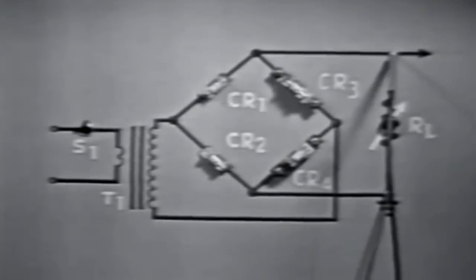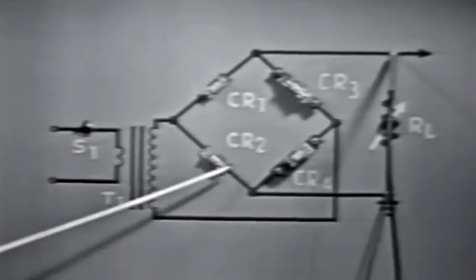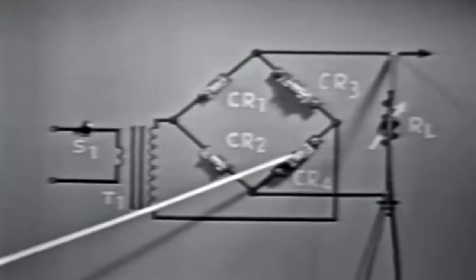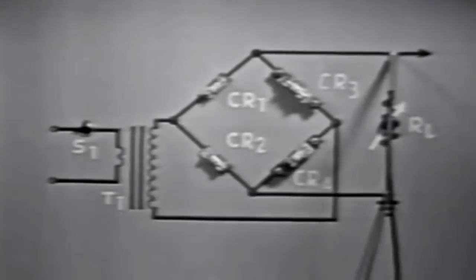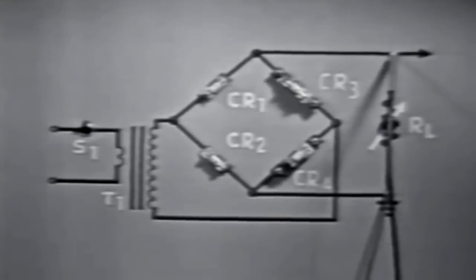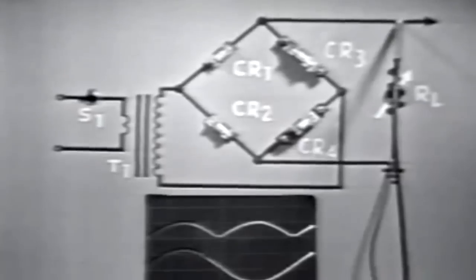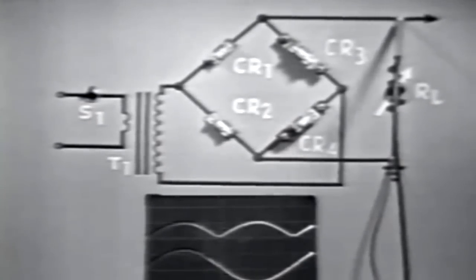The rectifier circuit consists of diodes CR1, CR2, CR3, CR4, and as previously mentioned, RL — a variable resistor. The circuit develops an output peak voltage as seen on this oscilloscope, which we've connected across the output.